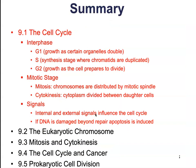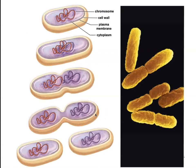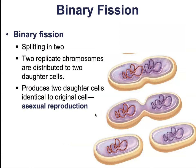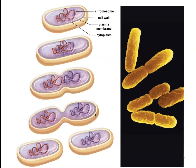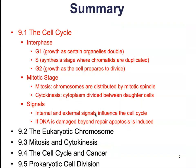Prokaryotic cell division is very straightforward: replicate, divide in half, binary fission. Now we're going to go over just a summary of the cell cycle, as we covered a lot in this chapter.